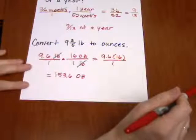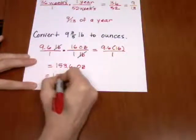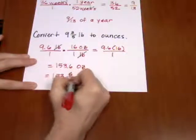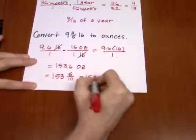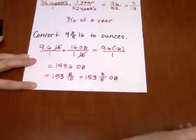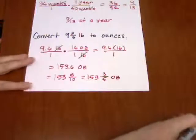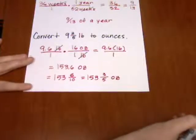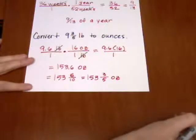Fortunately, I know that 0.6 reduces to 3 fifths. So when I have 9 and 3 fifths pounds, that is the same thing as 153 and 3 fifths ounces.